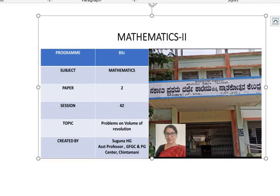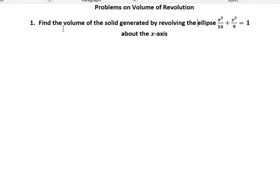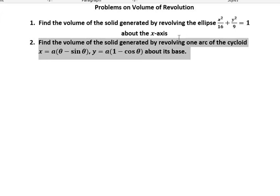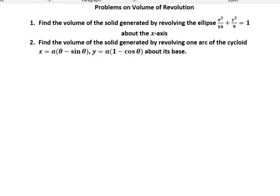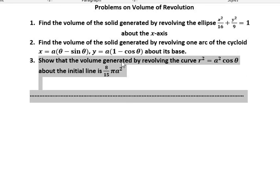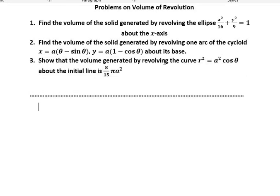In this video, we are going to solve few problems on volume of revolution. First one: find the volume of the solid generated by revolving the ellipse x²/16 + y²/9 = 1 about the x-axis. Problem 2: find the volume of the solid generated by one arc of the cycloid x = a(θ − sinθ), y = a(1 − cosθ) about its base. And another problem: show that the volume generated by revolving the curve r² = a²cosθ about the initial line is 8π a³/15.